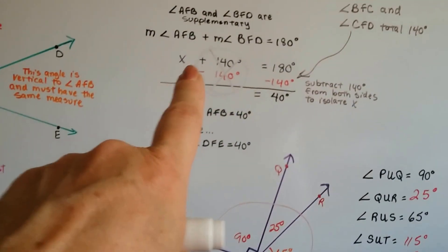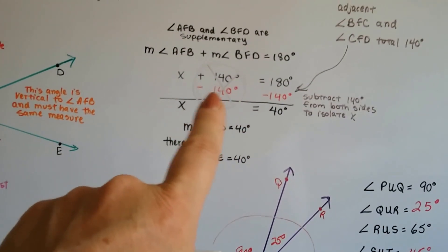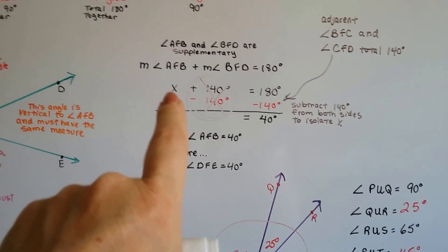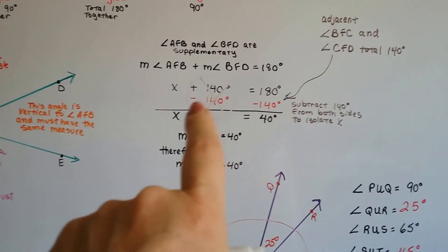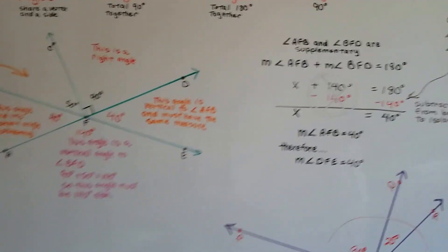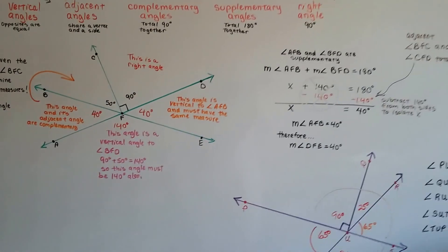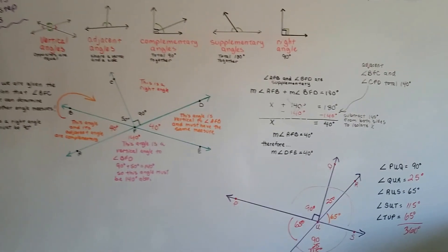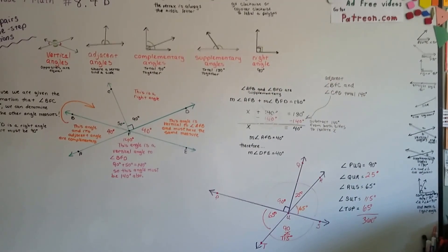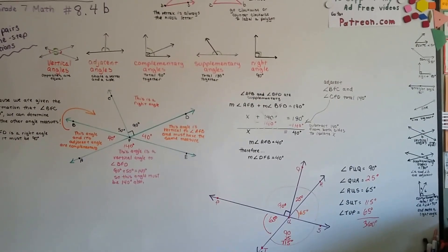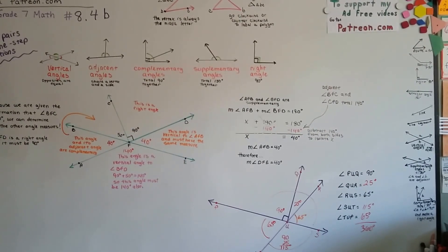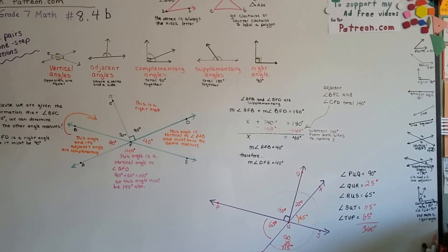And we solved it just like we solved our equations when we isolated the variable and we took 140 away from each side. So that's a one-step equation with angle pairs. In 8.4C, we're going to do two-step equations with angle pairs. I hope this was helpful. We're going to keep moving through geometry, and I'll see you next video. Bye.